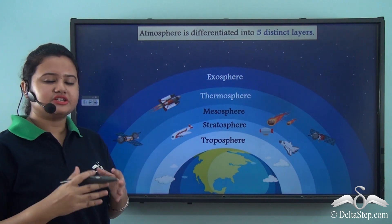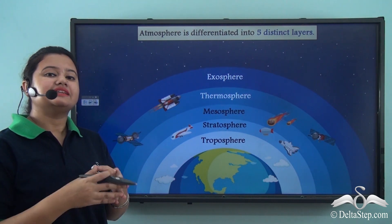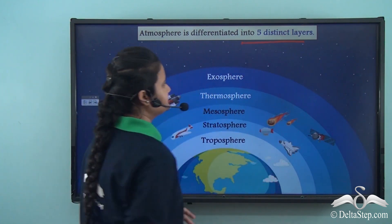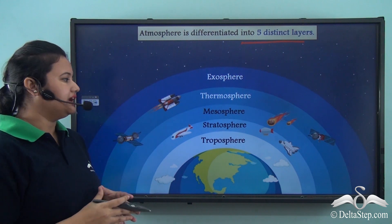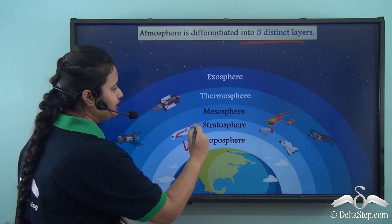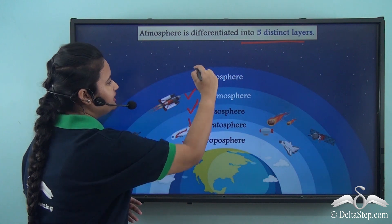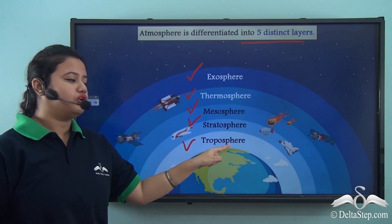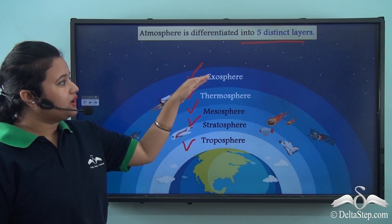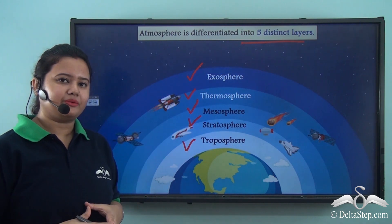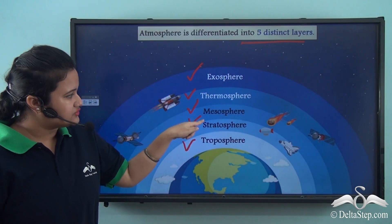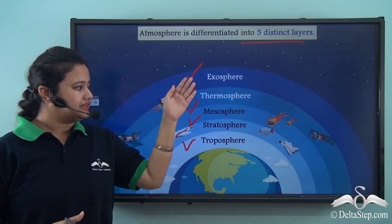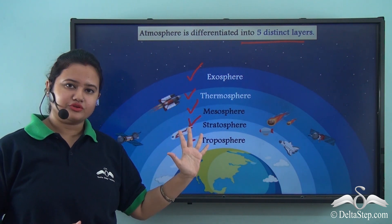Based on several characteristics, scientists have differentiated the atmosphere into five distinct layers, namely: troposphere, stratosphere, mesosphere, thermosphere and exosphere. Troposphere is the lowest layer of atmosphere and exosphere is the outermost layer of atmosphere. In between these layers we have stratosphere, mesosphere and thermosphere.